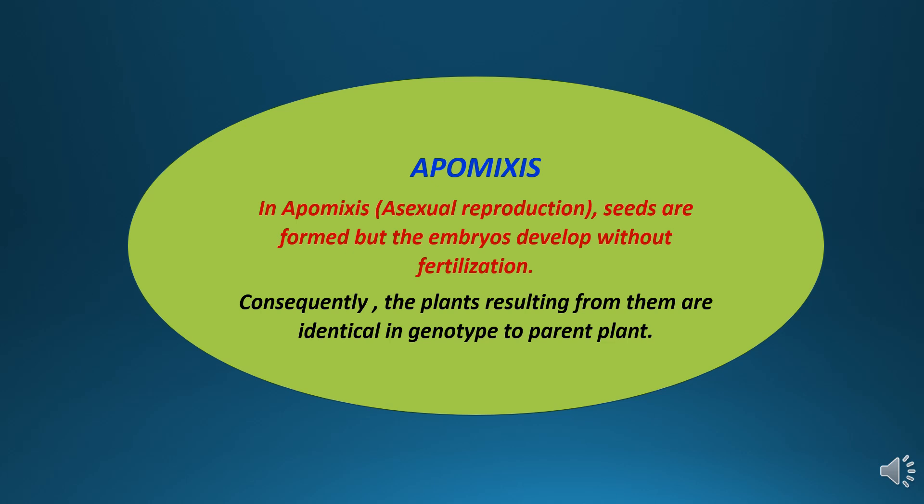Apomixis can be defined as a mode of asexual reproduction where seeds are formed but the embryo develops without fertilization. After reproduction, the plant will result in an identical genotype to the parental lines which are used for the reproduction.